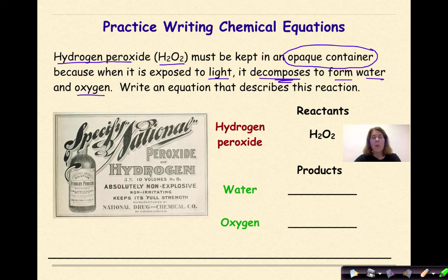That is actually on purpose because if hydrogen peroxide is exposed to light, it will break down into water and oxygen. So our reactant is given to us, and that is H2O2. And our first product is water, which we know is H2O. And our second product is oxygen, and we know that oxygen is a diatomic, so that is O2.